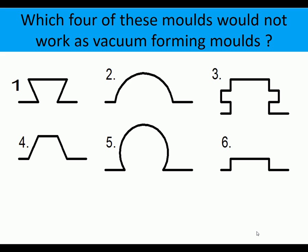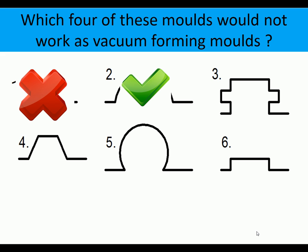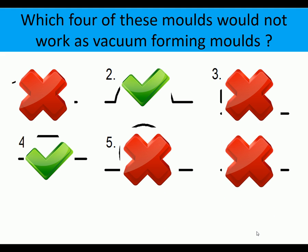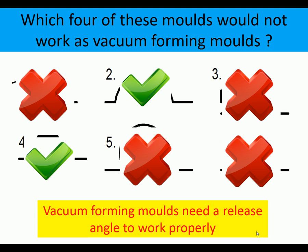Which four of these mold shapes would not work as vacuum forming molds? Two will work and four won't. Number one — no. Number two — yes, it will work. Number three — no. Number four — yes. Number five — no. Number six — no. It's important to remember that vacuum forming molds need a release angle to work properly.